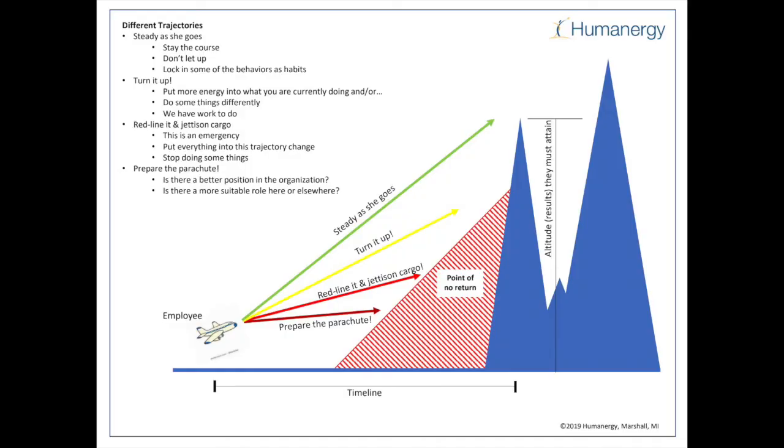As we play with this tool, we actually draw in four different types of trajectory. The first one we call steady as she goes. It's a green line going straight over the mountains at a great angle, great direction. We just need to stay the course, don't let up, and look at behaviors to lock them into habits.